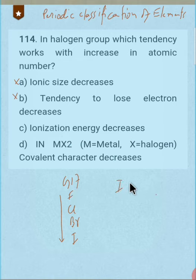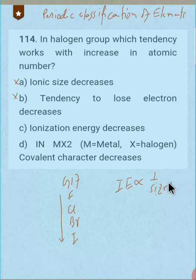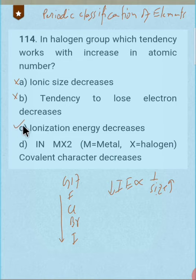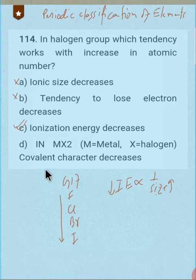Ionizing energy is inversely proportional to size. Lesser the size, lesser will be the ionizing energy. Down the group, size increases, so ionizing energy will decrease — so this is the correct answer. Let me also explain the fourth option: in MX₂, where M is a metal and X is a halogen, covalent character decreases.